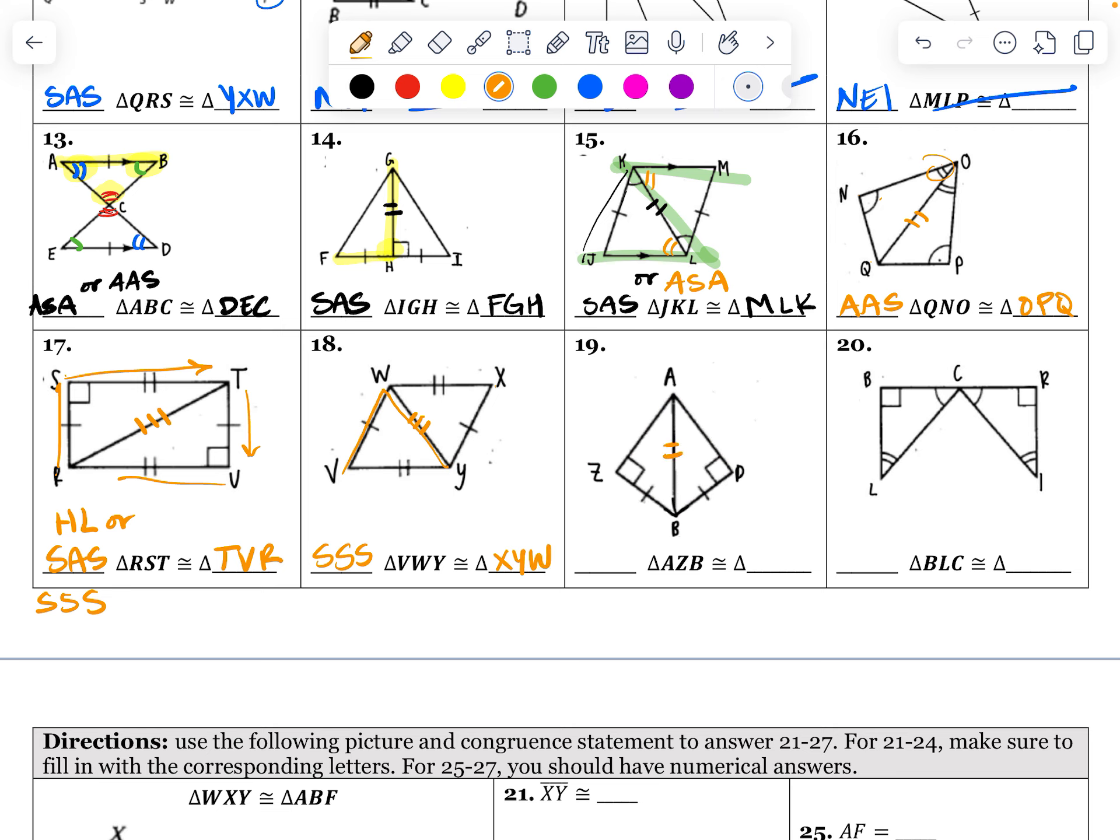And then shared side in the middle. That does look like bad words. So it's SSA. Which means I have a hypotenuse and a leg of a right triangle. So that is HL. AZB is going to be the same as ADB.